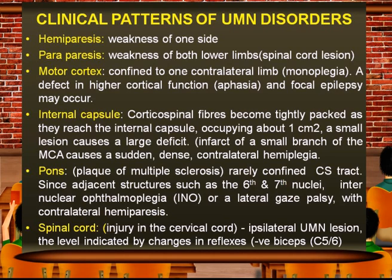When the internal capsule is involved, the corticospinal tracts become dense, leading to a larger deficit — contralateral dense hemiplegia, particularly when the middle cerebral artery is involved. In lesions of the pons confined to the corticospinal tract, adjacent structures such as cranial nerve VI or VII nuclei may be affected, causing internuclear ophthalmoplegia or lateral gaze palsy with contralateral hemiparesis.